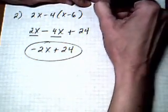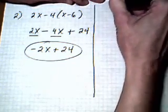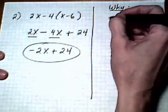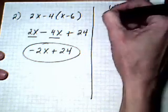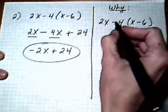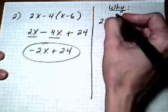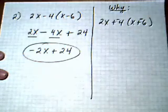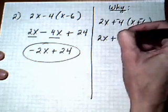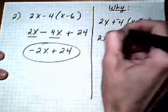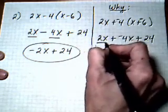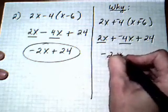Now let's take a look at why that shortcut method is okay, because there's another way you can do it that shows more explicitly what's happening to the signs. We start with the original problem: 2x minus 4 times x take away 6. I'm going to rewrite it so that subtraction becomes add the opposite — add a negative, add a negative. Bring down the 2x; minus 4 distributes onto x to give minus 4x, bring down the add; minus 4 times minus 6 is positive 24. Then combine like terms: 2 take away 4 gives minus 2x plus 24.